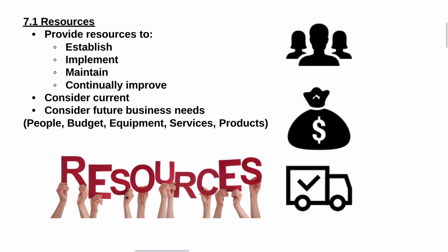Clause 7.1 is entitled Resources. The organization needs to provide resources to establish, implement, maintain, and continually improve their business and their OSH management system. In thinking about resources, we need to consider current and future business needs. Resources include people, budget, equipment, services, and products.